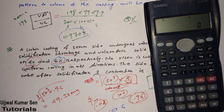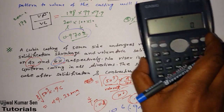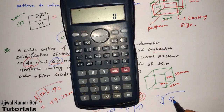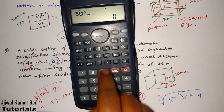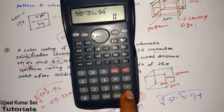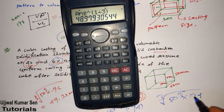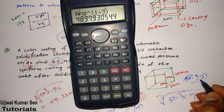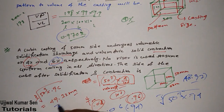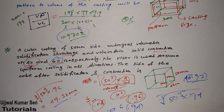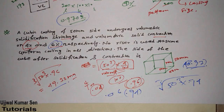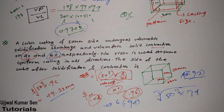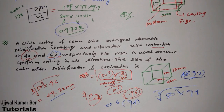So the two answers for this question are 49.32 mm and 48.97 mm. That is all about these two GATE questions on shrinkage. I hope you enjoyed the tutorial. I'm making this video in a numerical-oriented way because I want you to perform well in competitive examinations. Thanks for watching, see you soon in the next video. Bye bye.